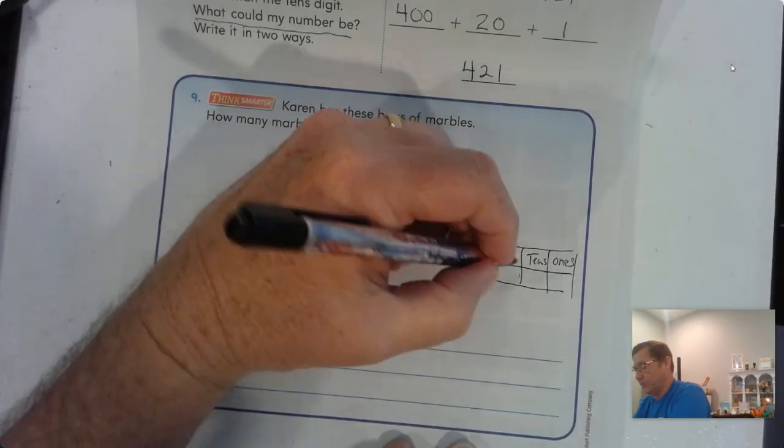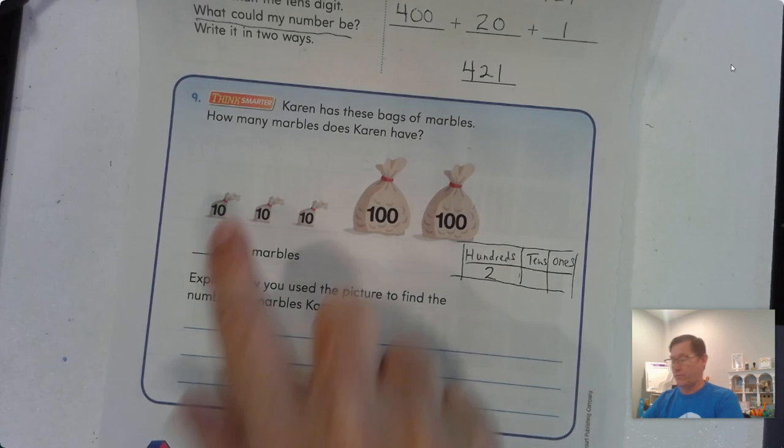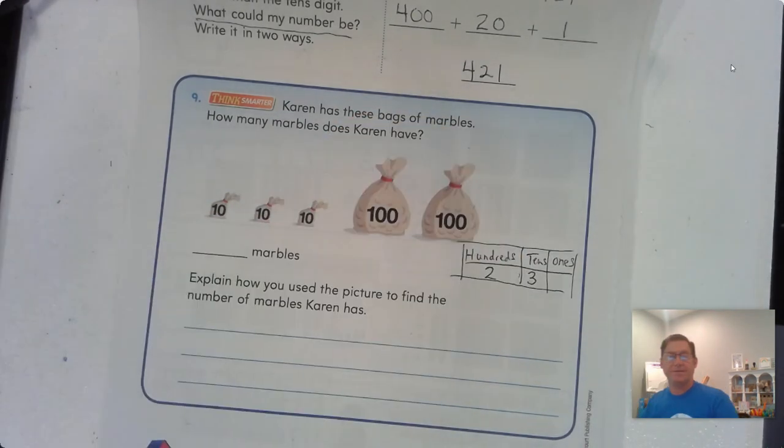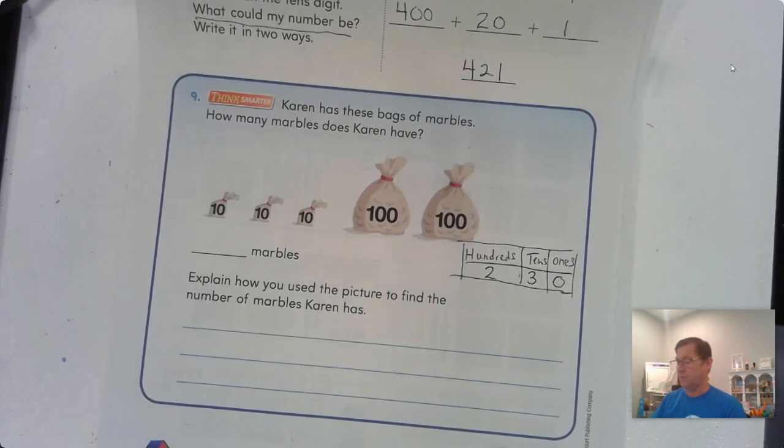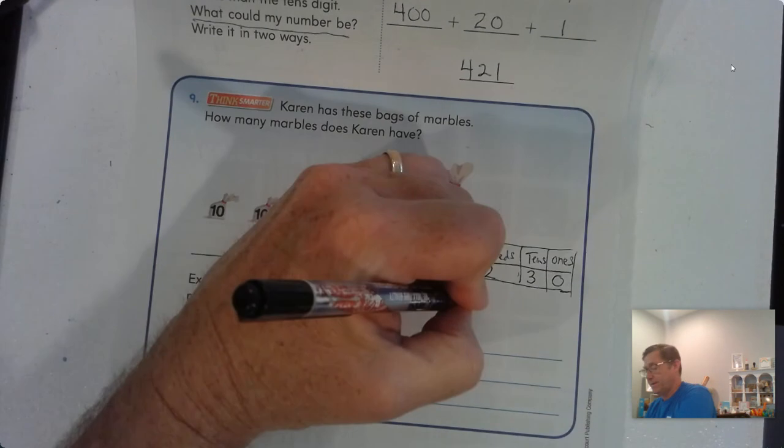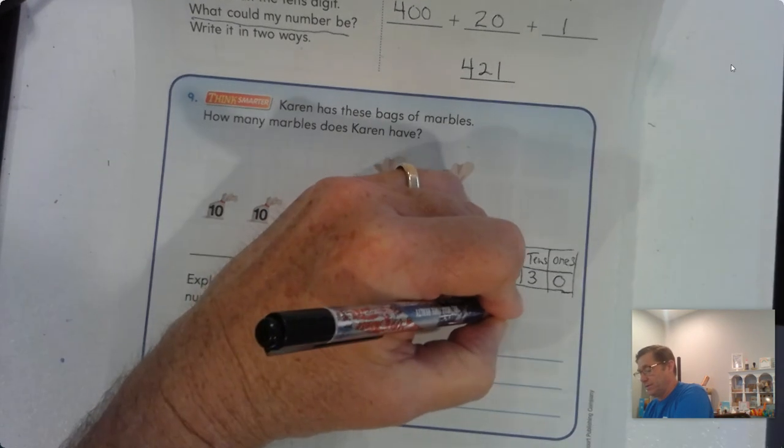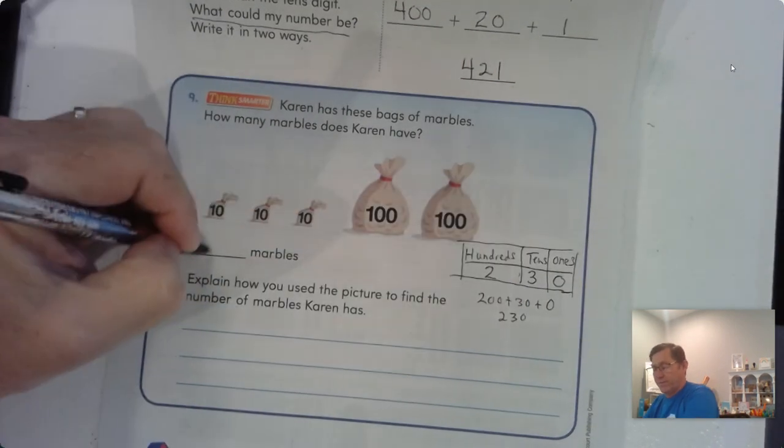All right. How many hundreds do we have? Well, we have 2. How many tens do we have? We have 1, 2, 3. Three bags of tens. How many ones? I don't see any ones, so that's got to be zero. All right. Well, we would just write it as 230, right? 200 plus 3 tens plus zero ones. 230.